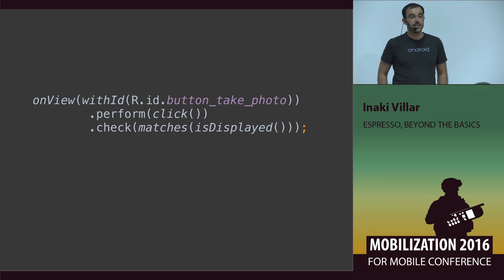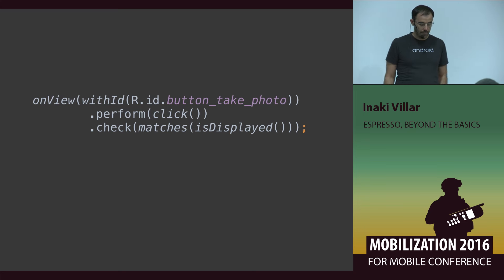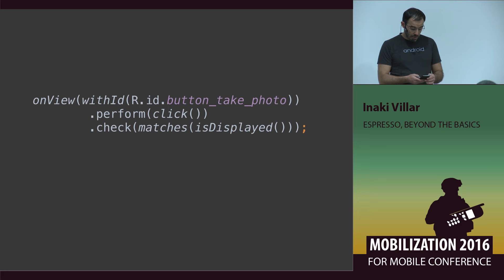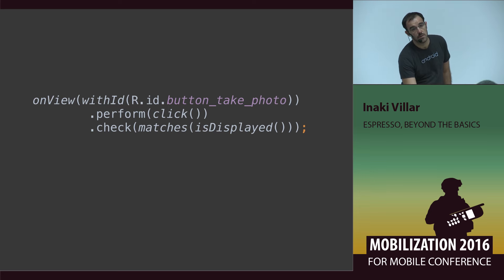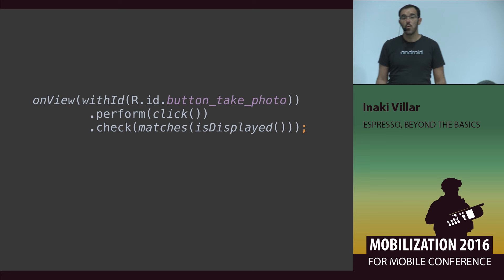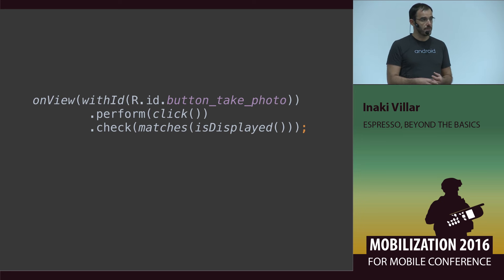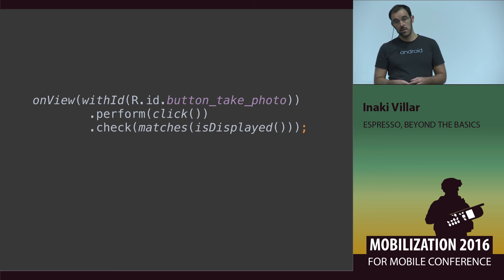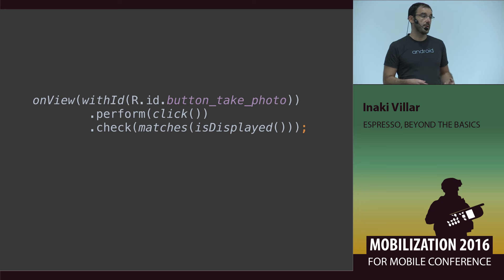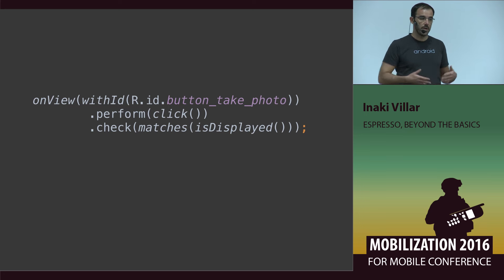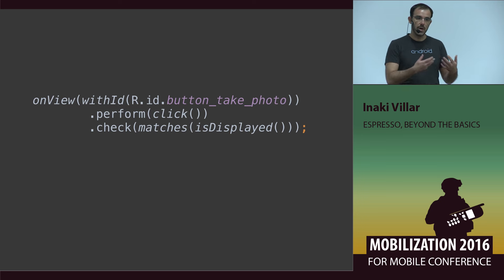This talk is about Espresso. We have the ViewMatchers, but today we are not going to talk about the basics of Espresso. This talk is going to be a little bit more advanced. Let's check the basic structure of Espresso and some tips to work with it. In my current company, Agoda, we have replaced the previous framework — Appium — and now we have covered 60% of manual testing. That means when we release a new version, QA is not doing 60% of the manual testing.